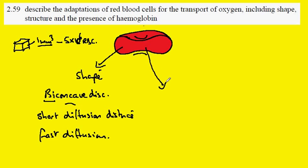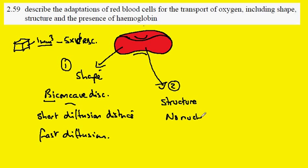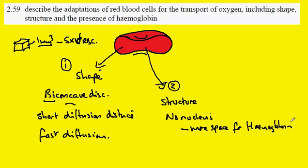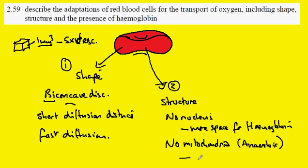Let's take number two: structure. When we look at the structure, there's no nucleus, which means more space for hemoglobin. Also there's no mitochondria — the cells are anaerobic — and perhaps this is so that they don't use up the oxygen being transported.